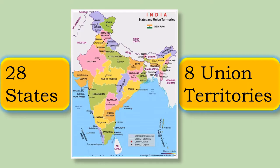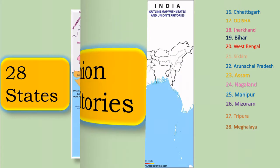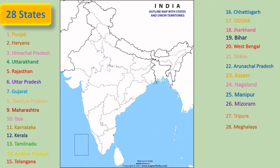Our country India is run by a central government. Since our country is big, a single central government will not be able to handle the entire nation, so it has been divided into smaller parts called states. Each state has their own government and chief minister to take care of state operations. Similarly, Union territories are run by the central government and they are typically small as compared to the states.